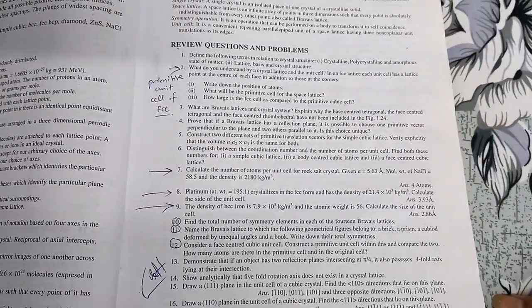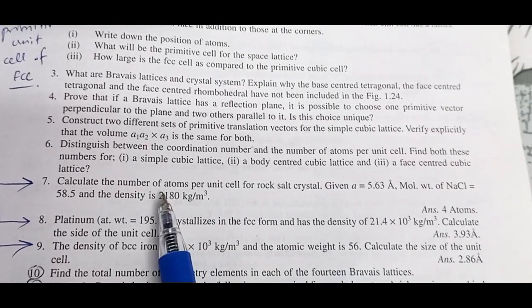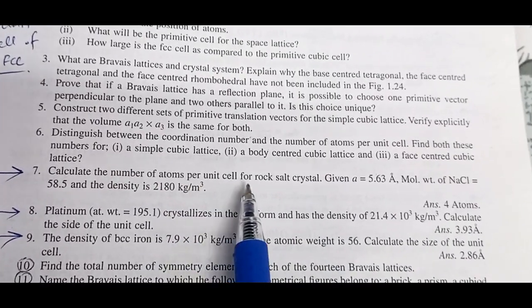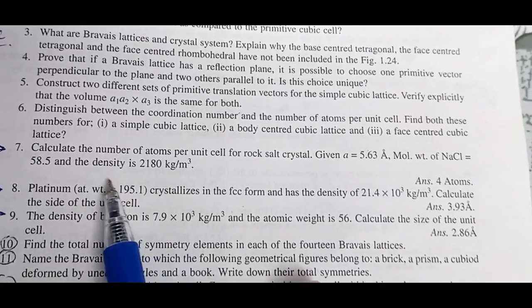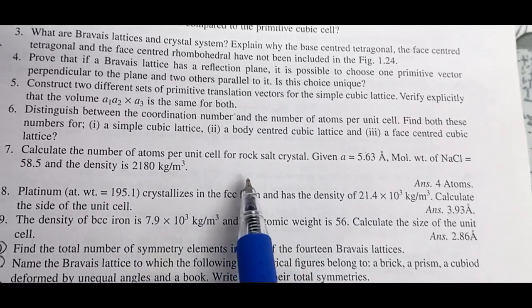The problem statement says calculate the number of atoms per unit cell for rock salt crystal. What we have to find is the number of atoms per unit cell for a rock salt crystal.